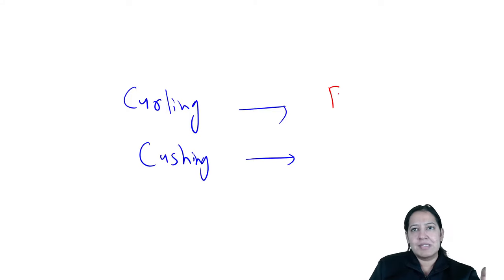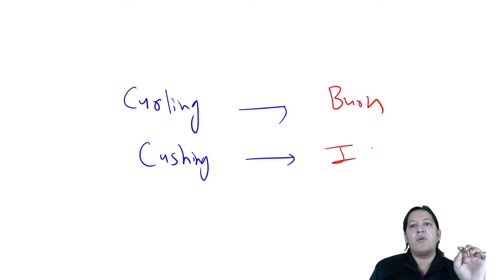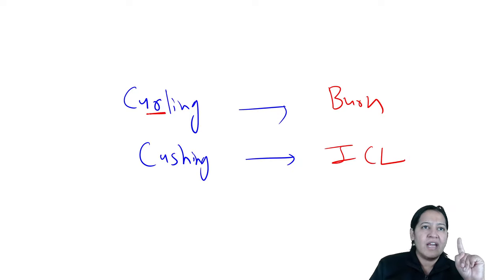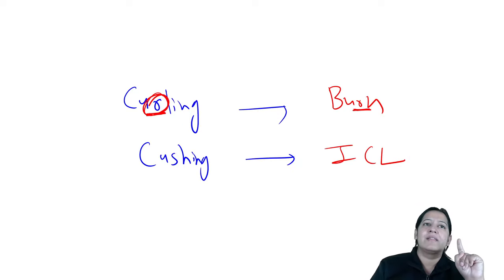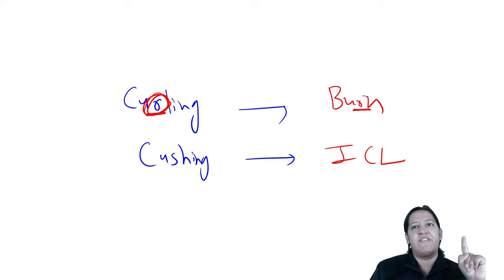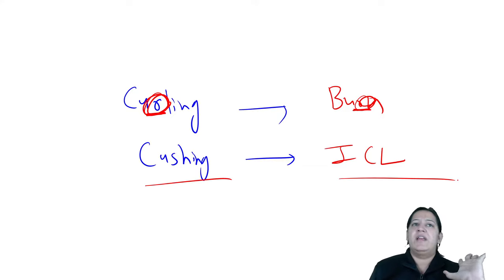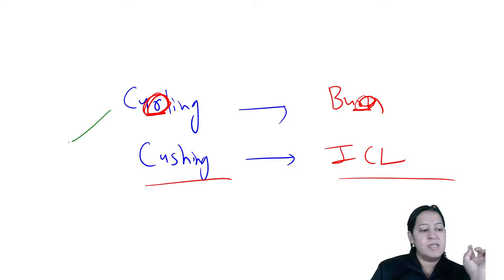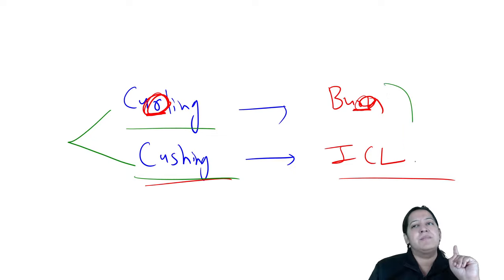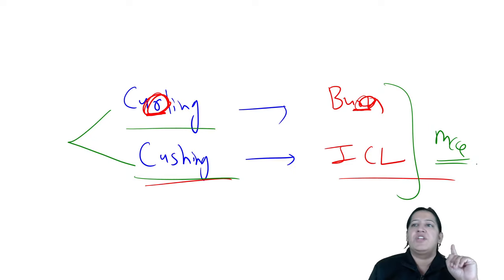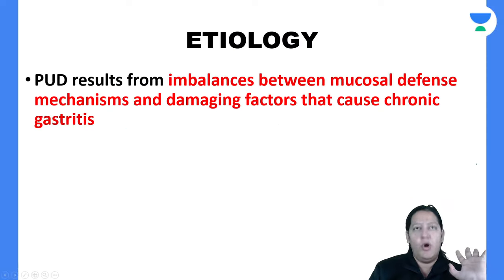Curling ulcer is in burns and Cushing ulcer is in intracranial lesions. A mnemonic: Curling contains the letter R, and burn also contains R — so learn it that way. Both start with C so there is high confusion. Curling and Cushing are repeat MCQs in competitive exams like NEET PG, FMG, and INICP.